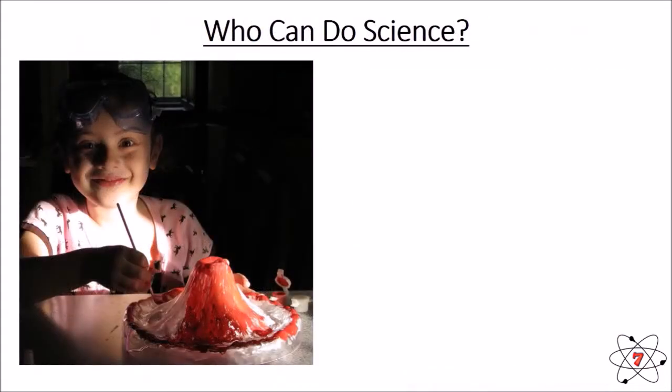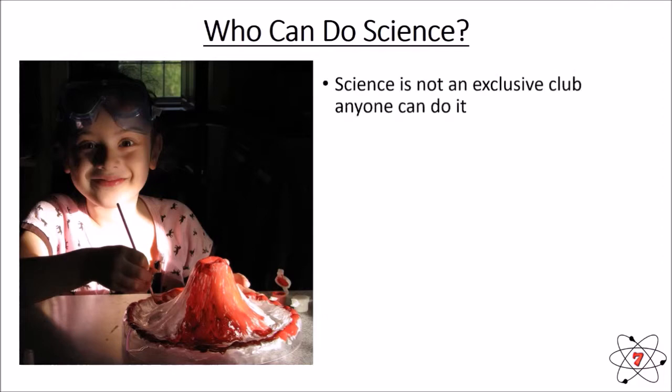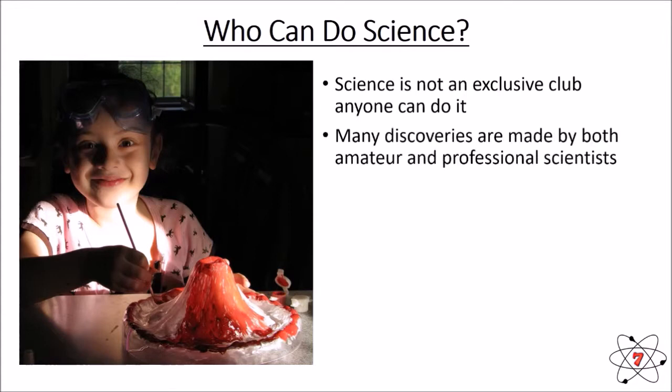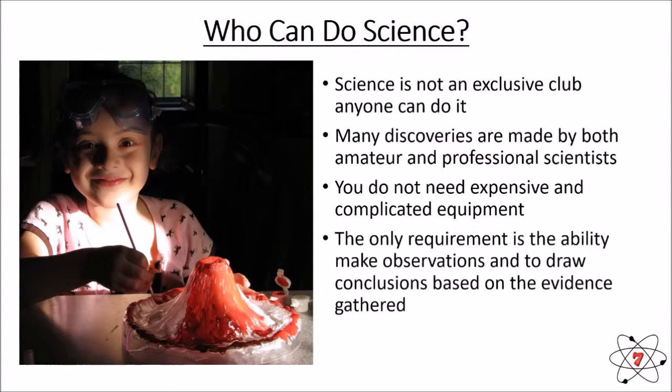The final question we need to ask ourselves about science is who can do it. And the answer to this is very simple. Science is not an exclusive club. You don't need any special criteria to be a member. Anyone can do it. And it's not just professional scientists that make discoveries. Many amateur scientists make discoveries, especially in the fields of astronomy. You don't always need expensive equipment or anything complicated to do science. The only requirement to do science is you can make observations, draw conclusions, and that has to be based on the evidence. So who can do science? You can do science.